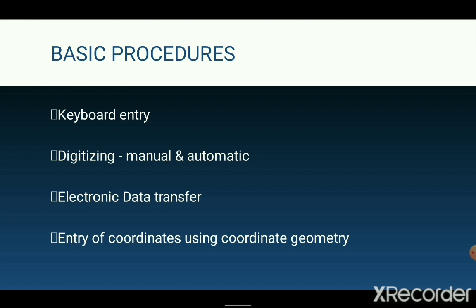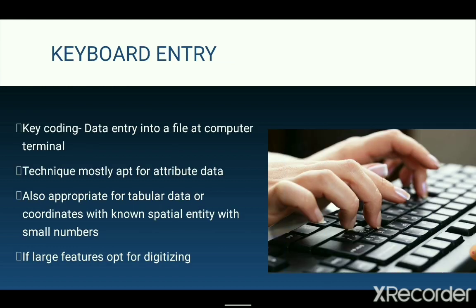We will learn the first three methods of data input in detail. Beginning with keyboard entry: keyboard entry, or key coding, is the data entry into a file at a computer terminal. This technique is used for attribute data available only on paper. The coordinates of spatial entities like point, line, and areal features can be encoded by keyboard entry. This technique is more appropriate for tabular data or coordinates of non-spatial entities that are very small in number. If the numbers are very large, coordinate features are better encoded using the digitization process. Keyboard entry procedures can be used to enter land record information, making it useful for development of cadastral information systems.